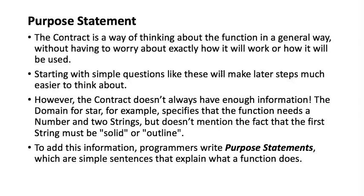Even in a complex problem, the next step should be clear, and it's pretty simple. But the contract doesn't have very much information, and a lot of times we need more. For example, if the domain is a star, that function needs a number and two strings, but it doesn't say that the string has to be 'solid' or 'outline', and that one of the strings has to be a color. To add that information, we're going to write a purpose statement.